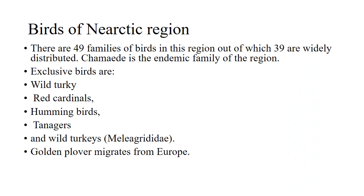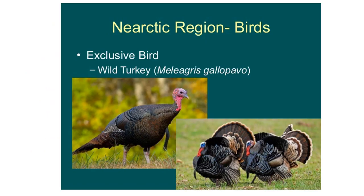Next are the birds of the Nearctic region. There are 49 families of birds in this region, of which 39 are widely distributed. Cracidae is the endemic family of the region. Exclusive birds include the wild turkey, red cardinals, hummingbirds, and juncos. The golden plover migrates from Europe. The wild turkey is only present in this region. Mostly the bird fauna shows affinity with the Neotropical region, and only a few species like the wild turkey are endemic.